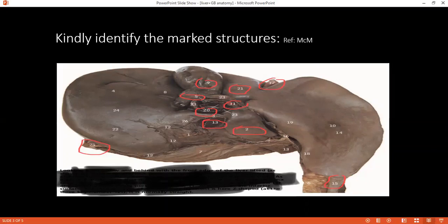Seventeen, please. It's fissure for ligamentum venosum. Anteriorly, it's through falciform and round ligament. Very good. Twenty one, please. It's caudate lobe.